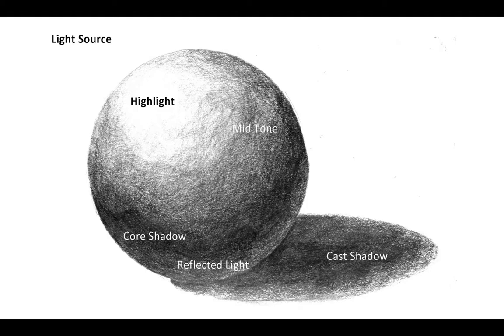This is a value scale. On one side we have white and on the other side we have black, and each of the other steps show how the artist is moving from one value to the next in equal measure. When you are working with physical objects in a realistic drawing and you have a light source, there are other useful terms to know: the highlight is where the light reflects directly off the object, then there is the midtone, the core shadow on the object itself, and on the underbelly of the object there is reflected light. Notice that on the surface, the cast shadow always connects to the object itself.